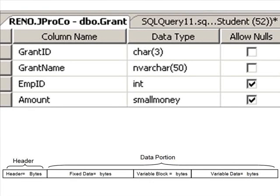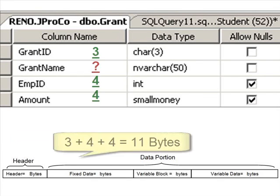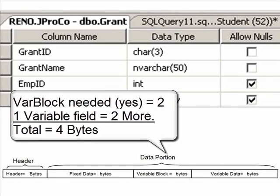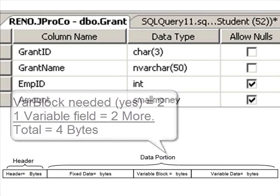So let's calculate what we know. We know the header takes up four bytes. We know the fixed length data takes up three plus four plus four, or eleven bytes. We know the variable block needs to exist, because we do have at least one variable length data field in here. So it's going to take up two bytes for the variable block plus two bytes for each piece of variable length data, and we have one. Therefore, the variable block will take up four bytes.